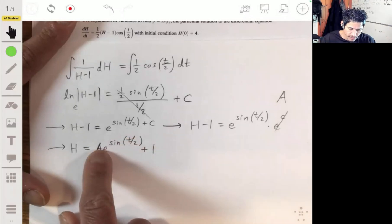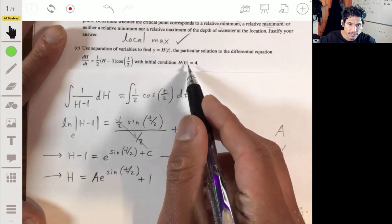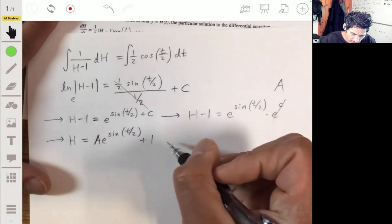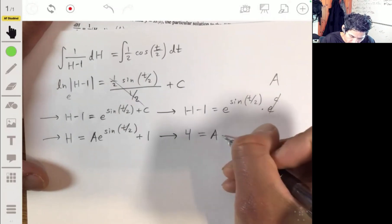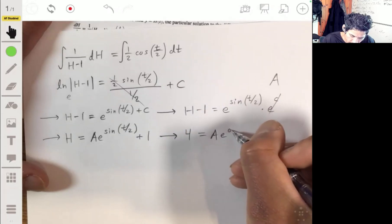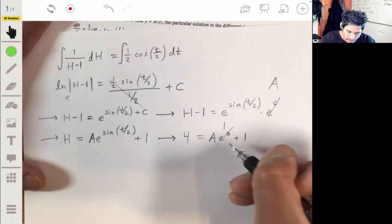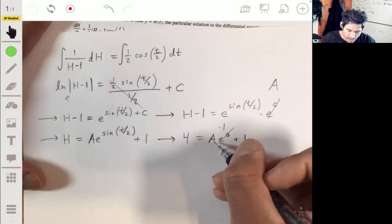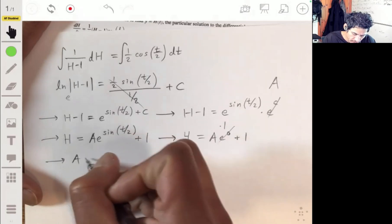Now we can solve for a by using our initial condition that we're told that h of zero equals four. So we're going to plug zero in for t and then we'll get four for h. So using that initial condition we'll have four is equal to a times e to the sine of zero, which is just zero. So we have e to the zero plus one. e to the zero is just one. So we have a times one plus one. So then a is just going to be three, because three times one plus one is going to be four. So a is equal to three.